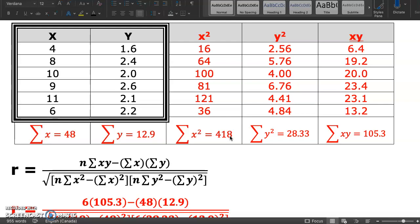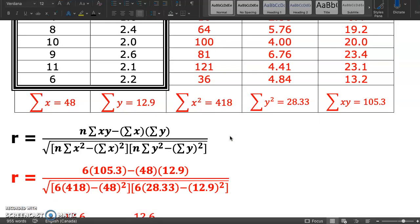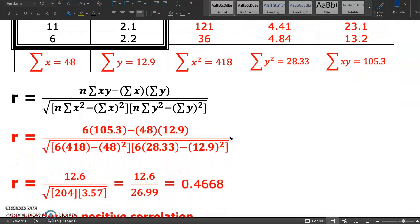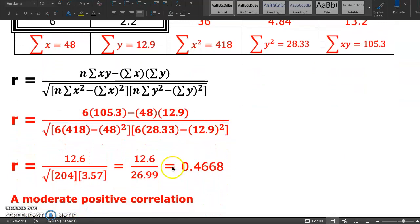We substitute into our formula with all of our given information, and we evaluate. It will give us some number. And remember our index for talking about the strength of a correlation coefficient. This is 0.4668. That is a moderate positive correlation.